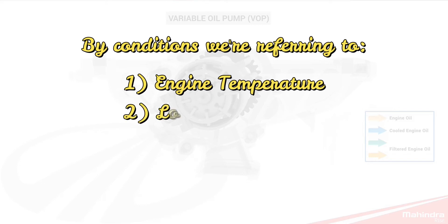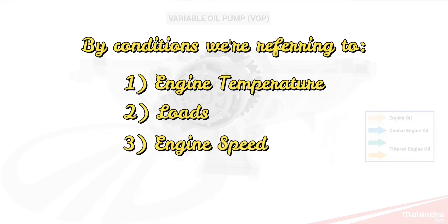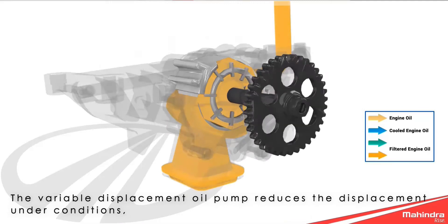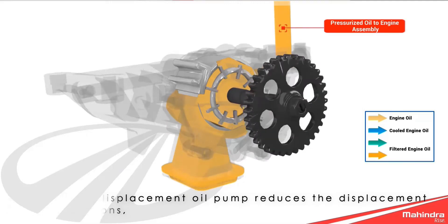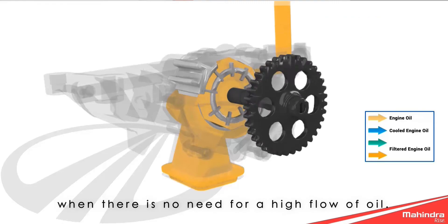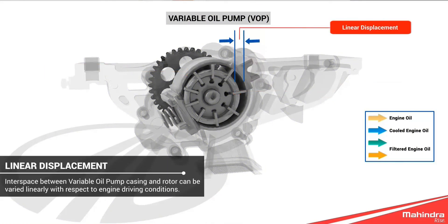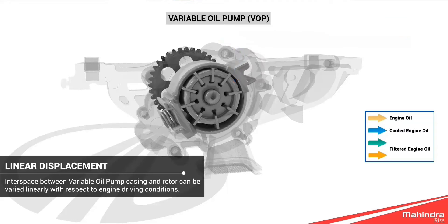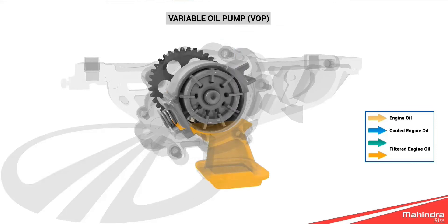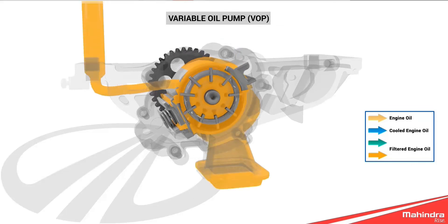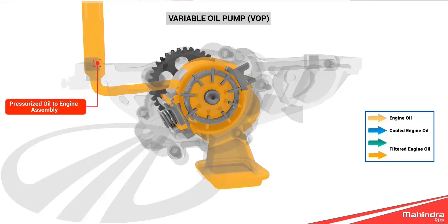By conditions, we are referring to engine temperature, loads, and engine speeds. The variable displacement oil pump reduces the displacement under conditions when there is no need for a high flow of oil. The volume of oil from the pump varies with RPM by changing the pump's displacement through a pivoting control chamber mechanism and sliding vanes. The variable oil pump varies the interspace between the outer casing and the vanes, and thereby controls the amount of oil being pumped out.